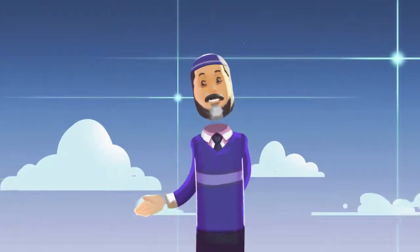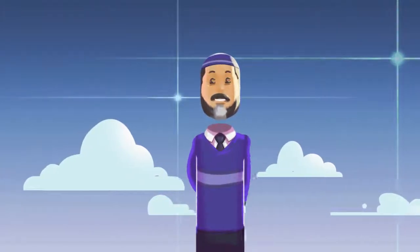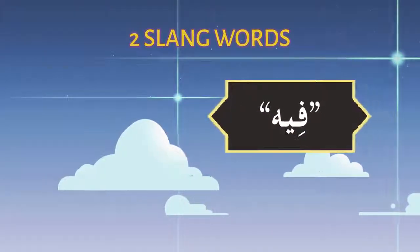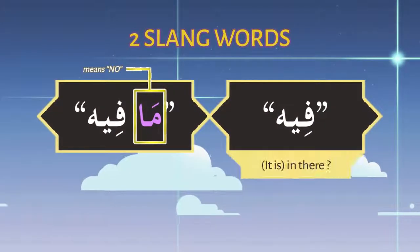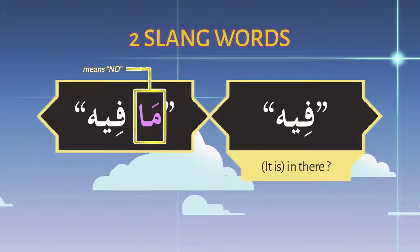Foreigners in the Arab world, with little or no Arabic knowledge, manage things with only two slang words: 'Fi' and 'Maafi'. Fihi actually means 'in there', and Maafi means 'not in there'.